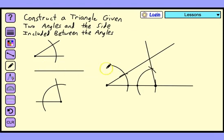This line segment we just made is the third side of the triangle, and we've located the third vertex, and our construction is done. We constructed a triangle given two angles and the side included between the angles. Signing off.